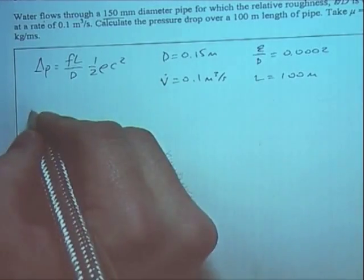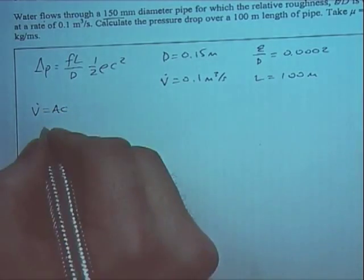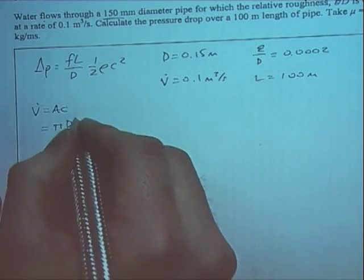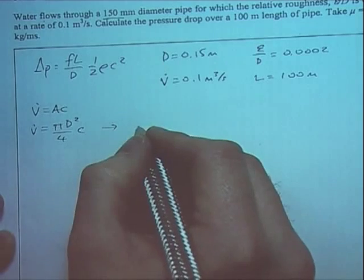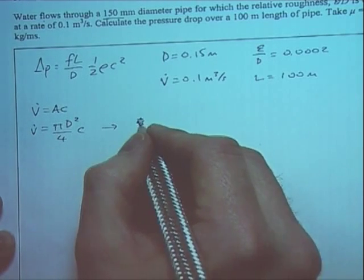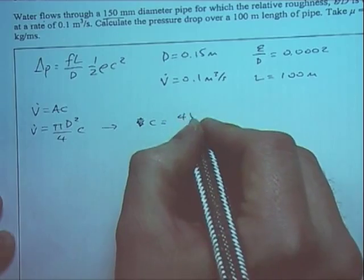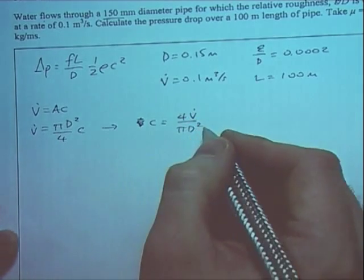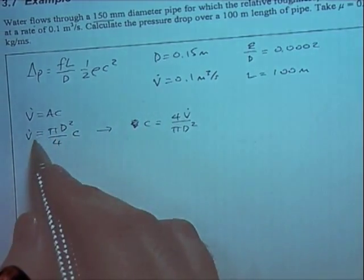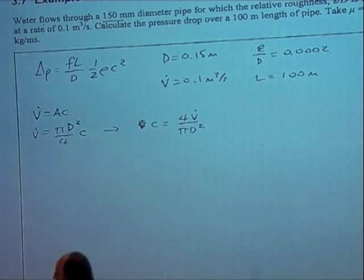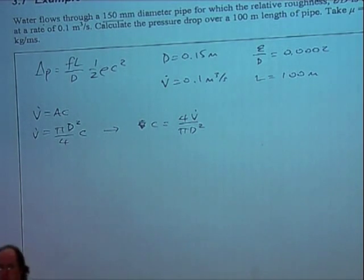Now because we've got V dot, we know V dot equals A times C. And so that is pi d squared upon 4 times by C. So we can rearrange that equation, we can say C equals 4 times V dot over pi d squared. So there's our equation for C based on V dot. You'll come across this quite frequently because you'll often be given the flow rate and you need to work out the velocity, which you can determine if you know what your diameter is.